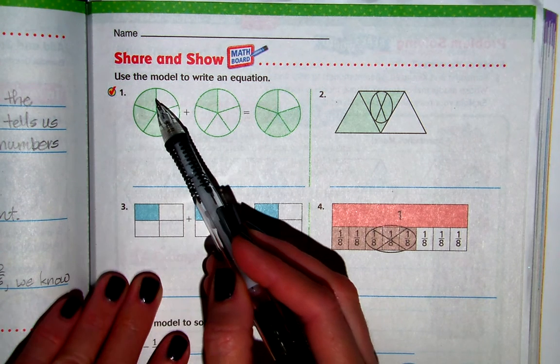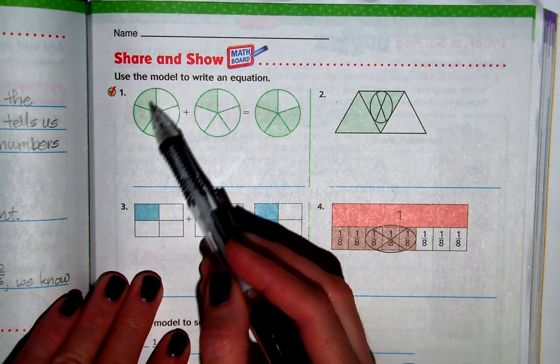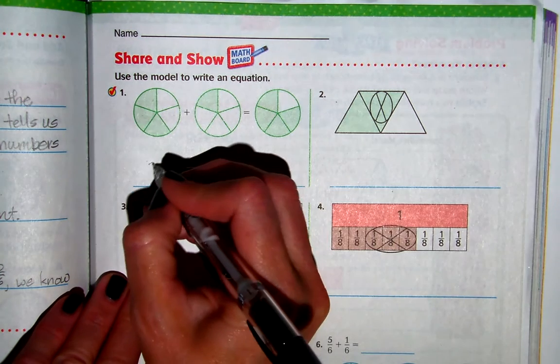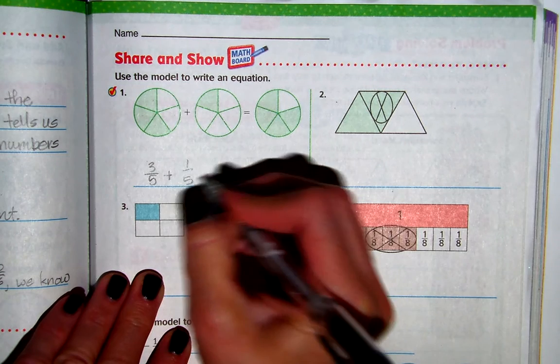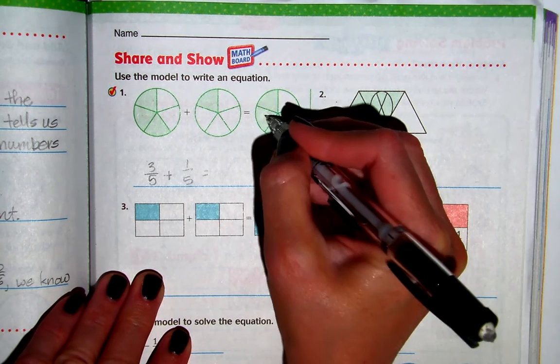And we count the parts that are shaded, 1, 2, 3. So this will be 3 fifths plus 1 fifth equals 1, 2, 3, 4, 4 fifths.